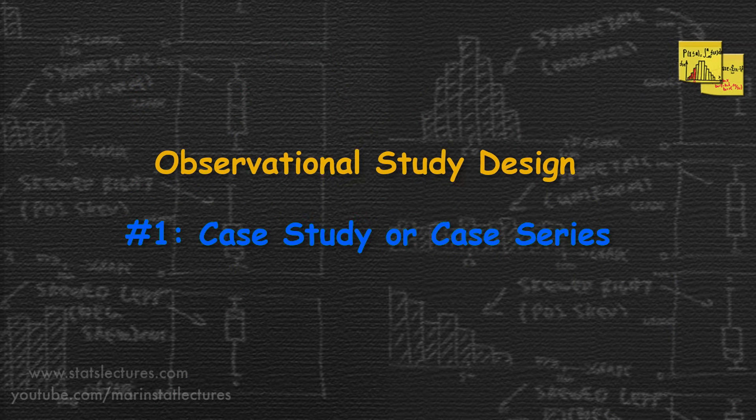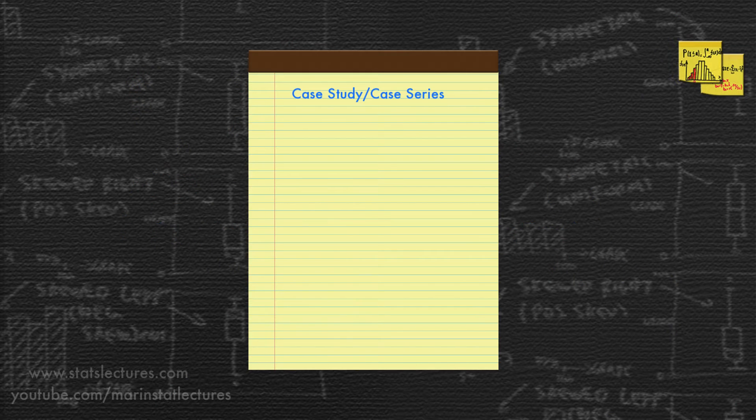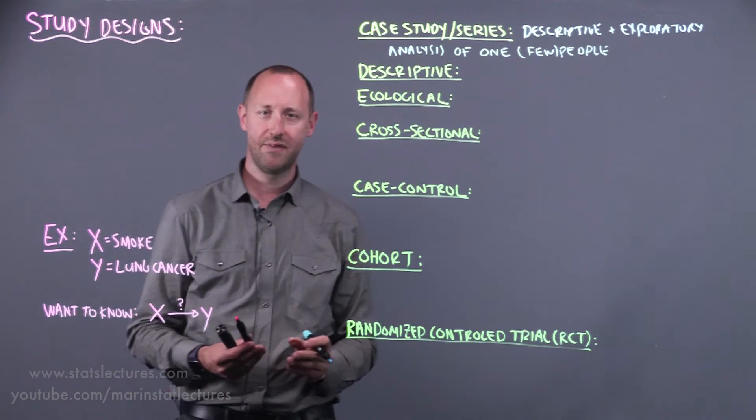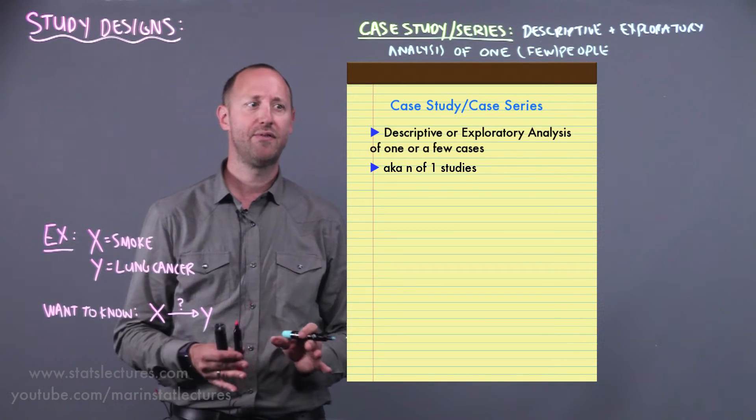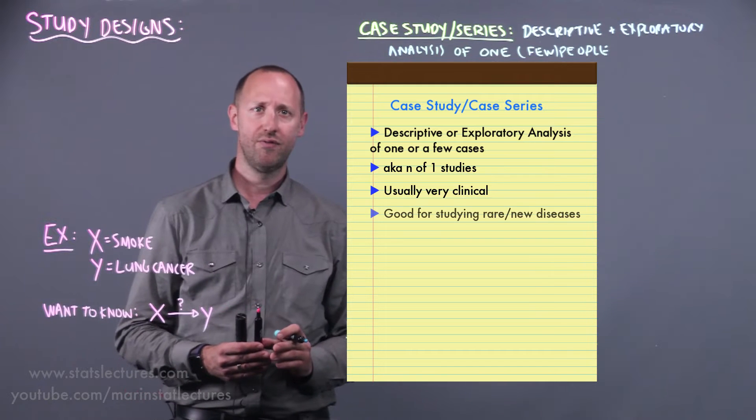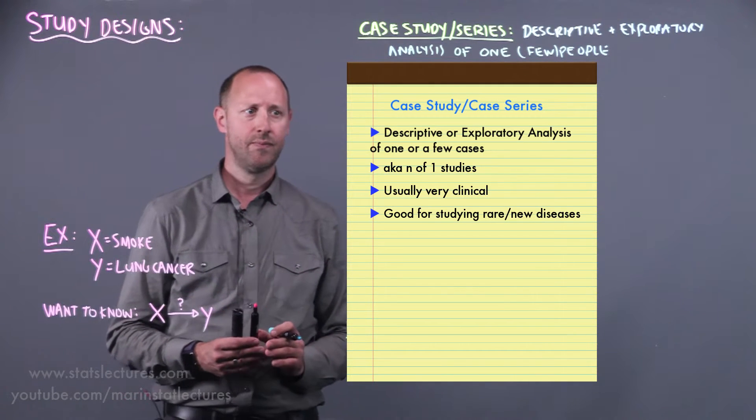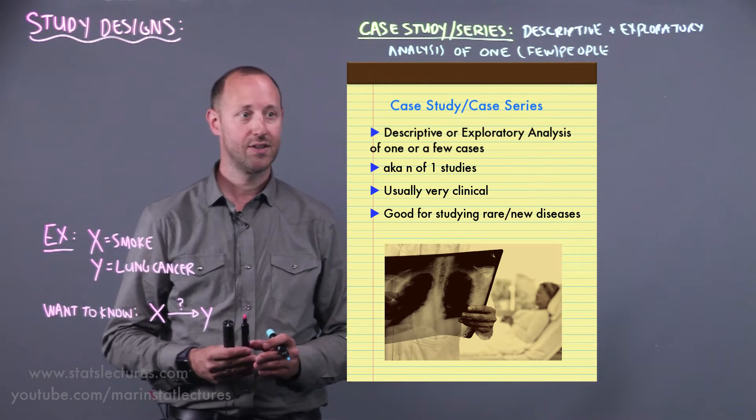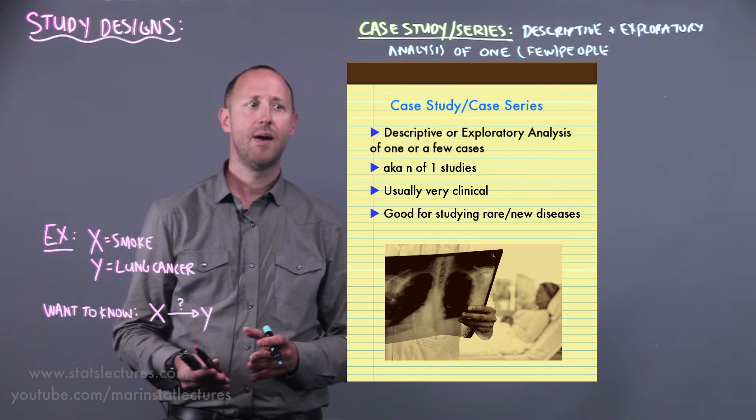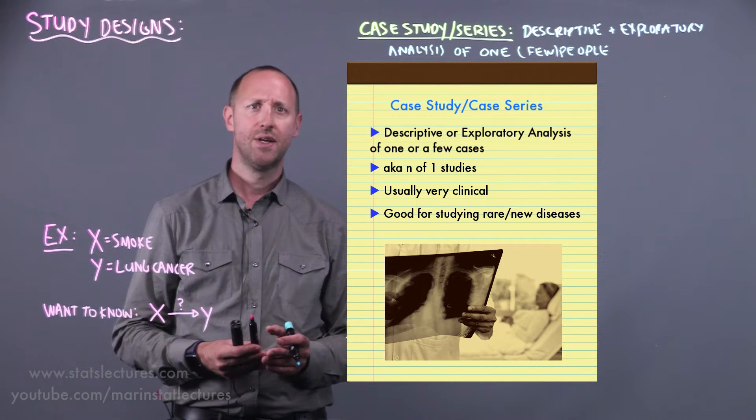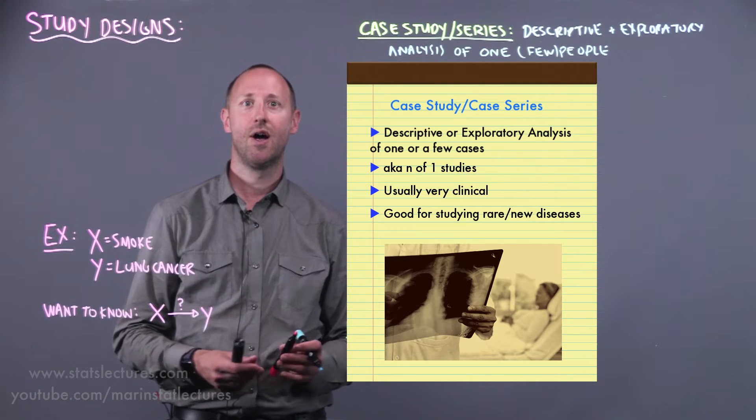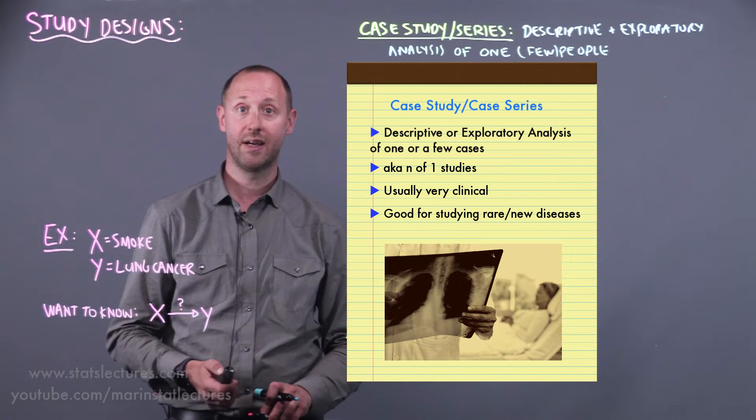The first is a case study or case series. These tend to be a descriptive or exploratory analysis of one or sometimes a few people. Sometimes these even get called N of 1 studies. They're often very clinical and usually involve studying rare or newer diseases. An individual has the disease, let's say lung cancer, and we try and describe them. We hope through doing this we discover potential causes and this leads to having some testable hypotheses on what may be causing or leading to the lung cancer.